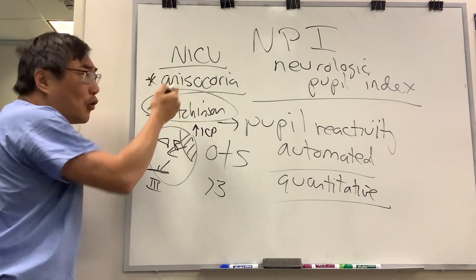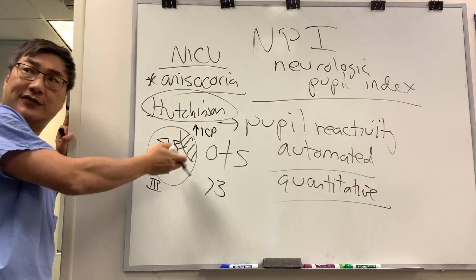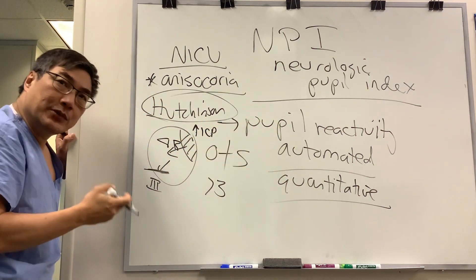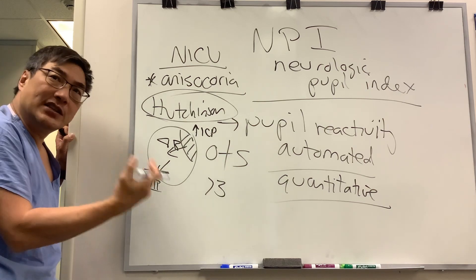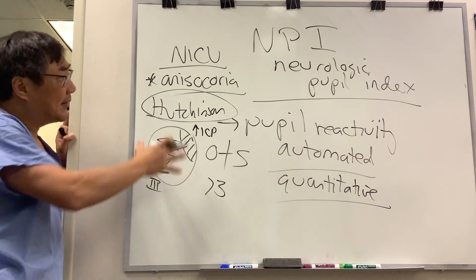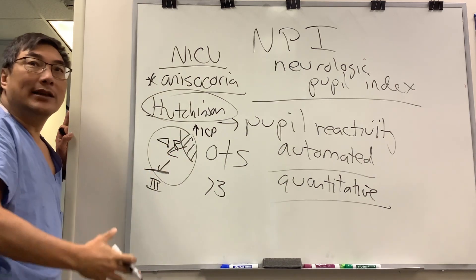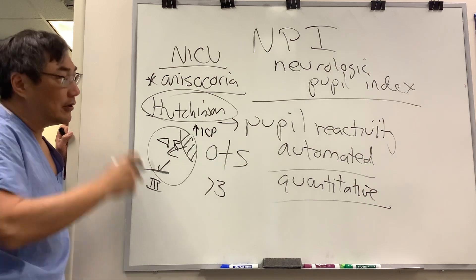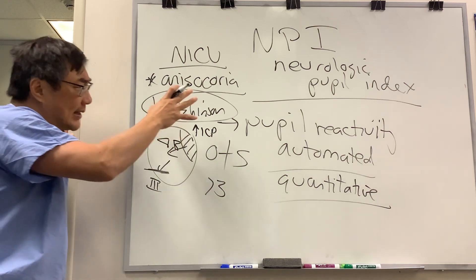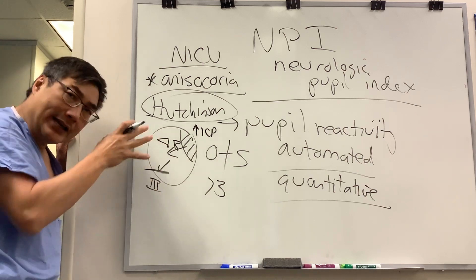Anisocoria is actually a better measure for what you're really worried about — shift, edema, the Hutchinson pupil. Machines can measure pupil reactivity, but the specificity for detecting an intracranial lesion is not that great. If it is abnormal, especially if there's anisocoria, it tells you something is wrong but not what is wrong. It might prompt imaging, but if you already have a known cause, reactivity alone is not helpful — the Hutchinson pupil and anisocoria remain most useful.